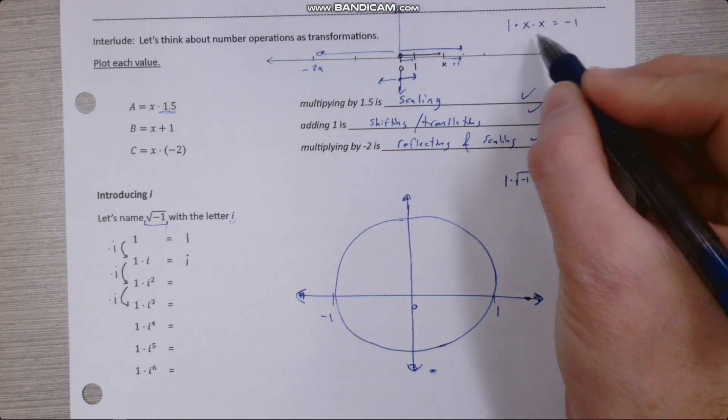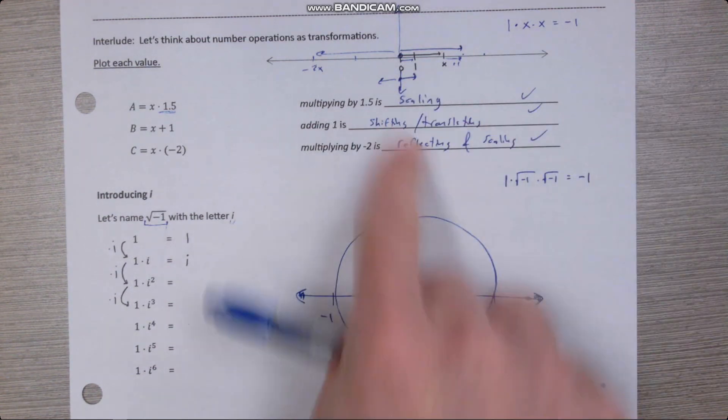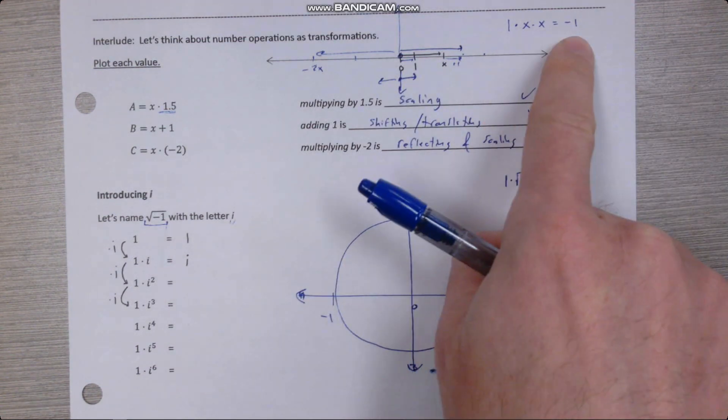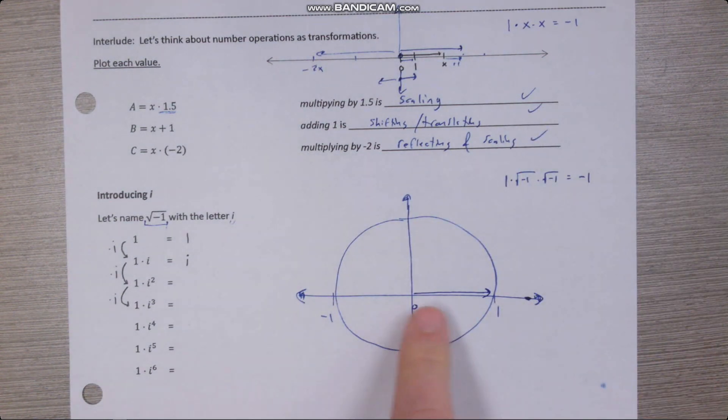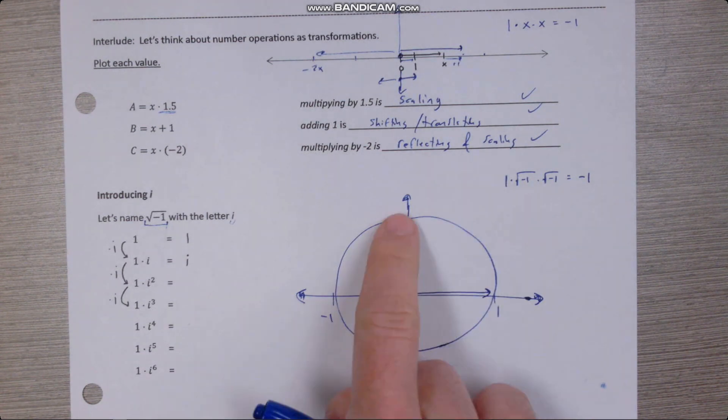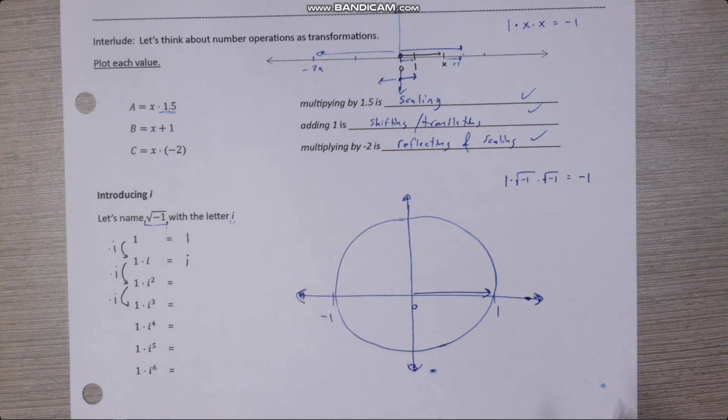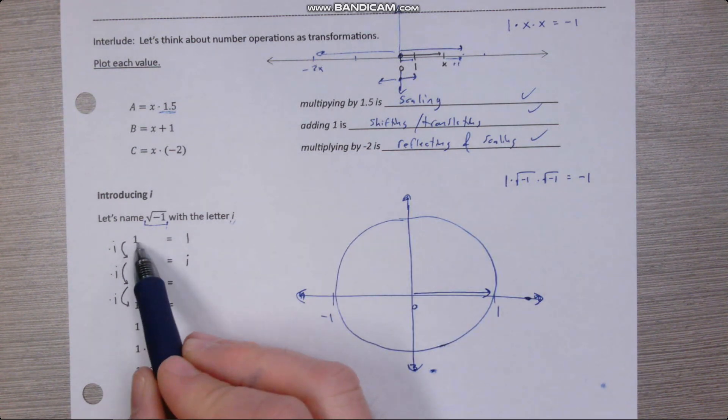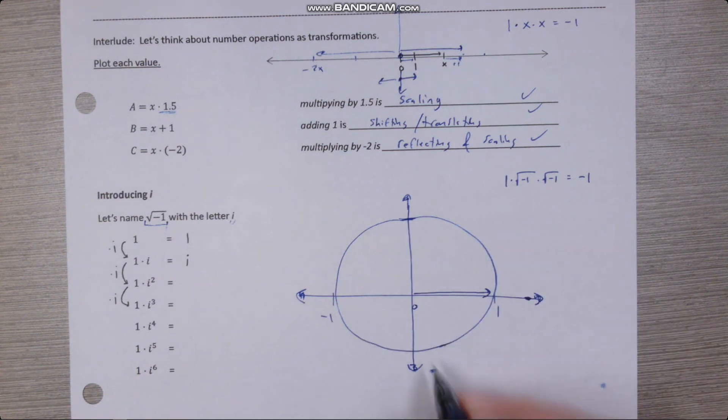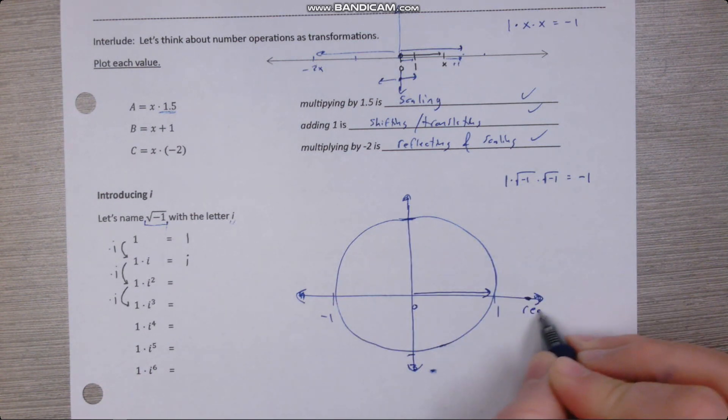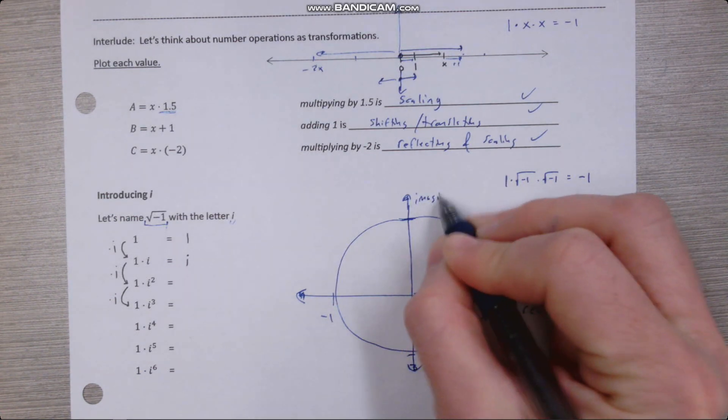So what geometric operation could we do twice to get to negative one? If we have the number one here and we rotate it by 90 degrees twice, that would get us to negative one. So let's try and fill out this table and kind of see how this plays out. So if I have one and I multiply it by i, that'll give me i, and in the complex plane this axis is called the real axis, this axis is called the imaginary axis.